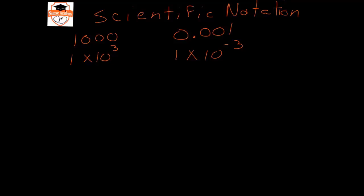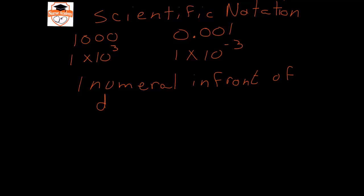An easy way to determine the magnitude of a number is to simply count how many times you move the decimal place. There is always one numeral in front of the decimal in proper scientific notation. The magnitude of the exponent is how many times you move the decimal to get between its position in normal notation and its position in scientific notation.